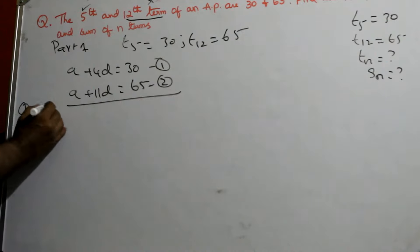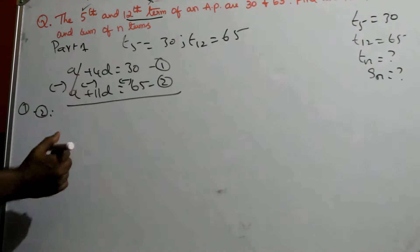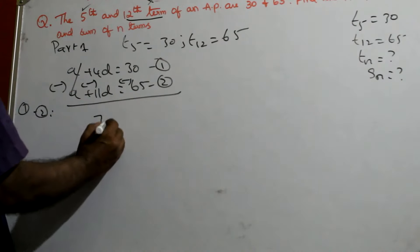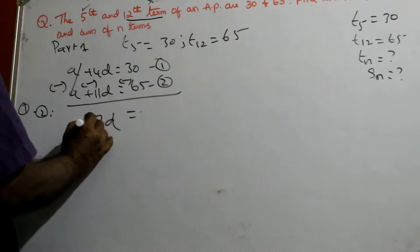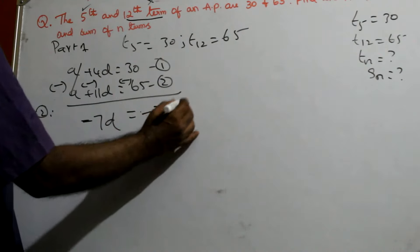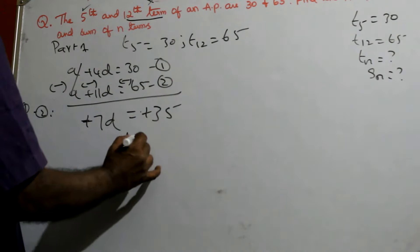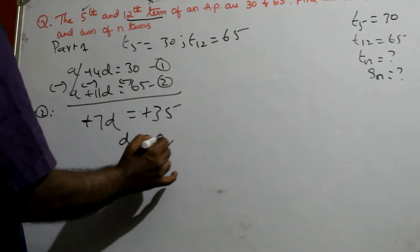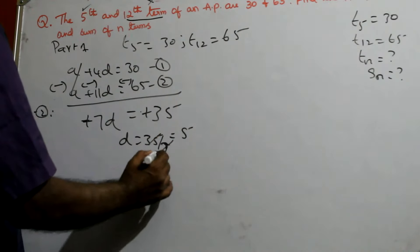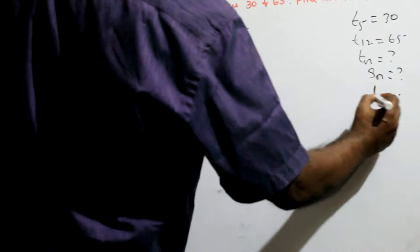So put 1 minus 2. When you subtract, you know the signs will change. A gets cancelled. 11 minus 4d is nothing but 7d is equal to 65. Is actually minus 7d is minus 35. So minus minus will become plus. And d is equal to 35 by 7, which is equal to 5. So you get common difference. D is equal to 5. So write here, d is equal to 5.